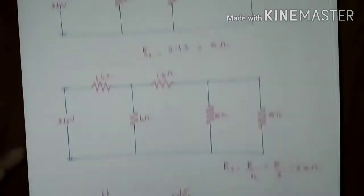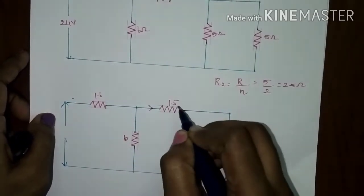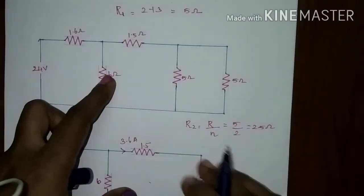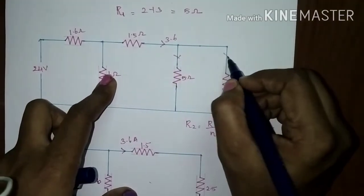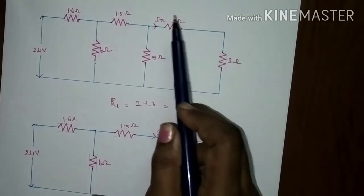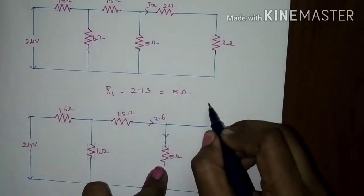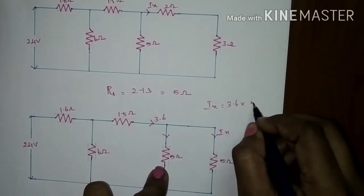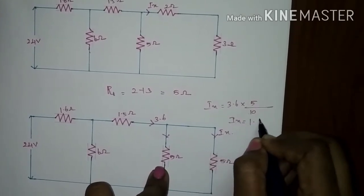Now go through the reverse procedure. This 3.6 ampere current will be flowing here — adding this gives 4 ohms with 3.6 ampere current. This 3.6 ampere current is divided into 2. This 5 ohm branch was formed by adding 2 and 3 ohms. Assume the current through it as Ix. Applying the current division rule again: Ix equals total current 3.6 into opposite resistance 5 divided by total resistance 10, giving Ix equal to 1.8 amperes.